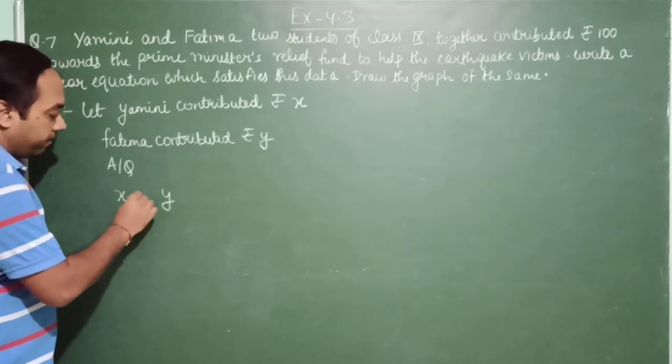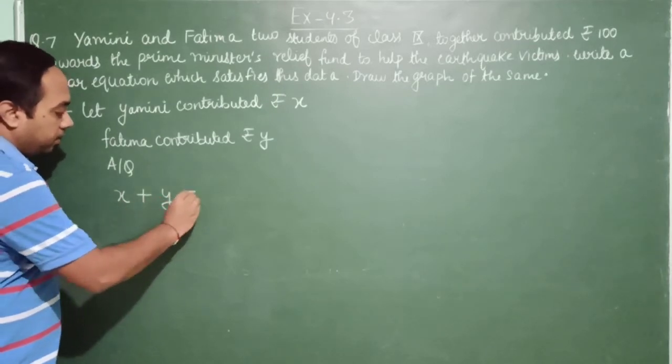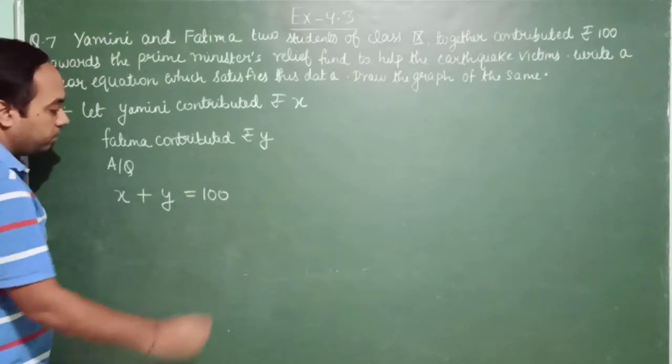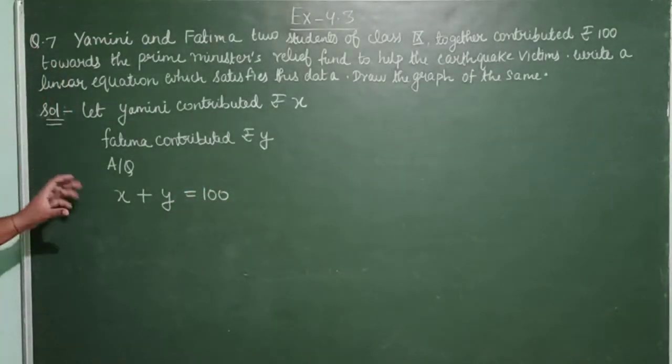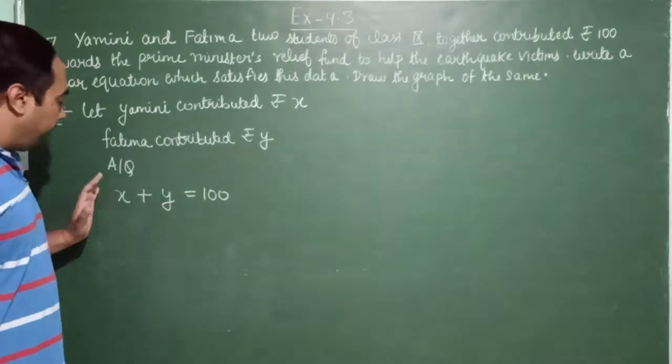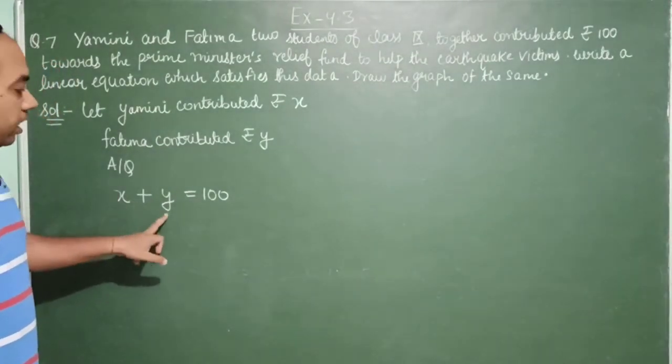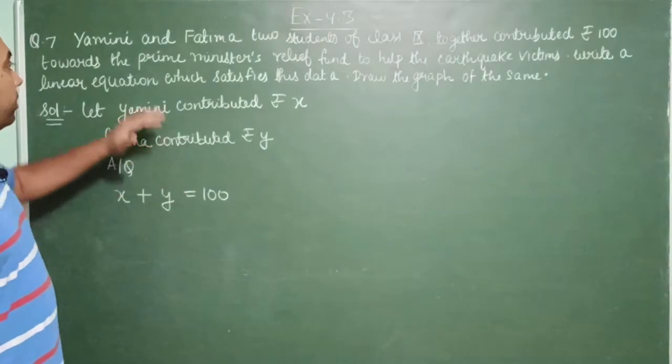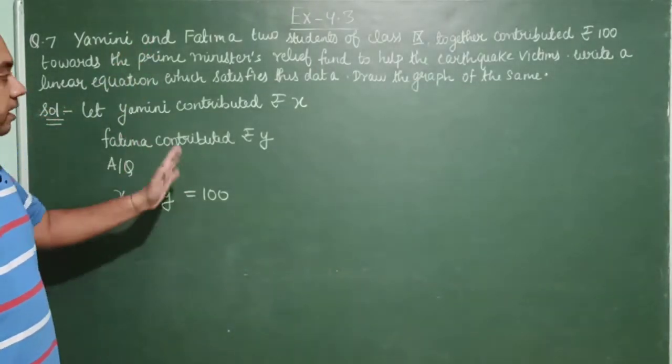Their total contribution is equal to 100. Now we have constructed a linear equation in two variables from the given information. Now the next thing is drawing the graph.